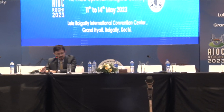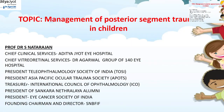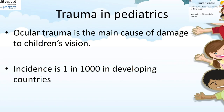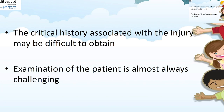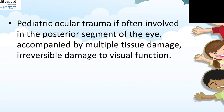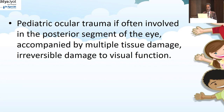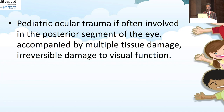Dr. Esnat Rajan will talk about management of posterior segment trauma in children. Ocular trauma is the main cause of damage to children's vision, with an incidence of one in a thousand in developing countries. Posterior segment trauma in pediatrics carries unique implications unlike those in adults; critical history associated with injury may be difficult to obtain, examination is almost always challenging, and it is often accompanied by multiple tissue damage and irreversible damage to visual function.